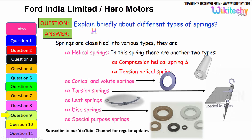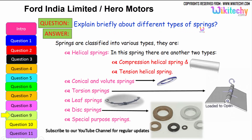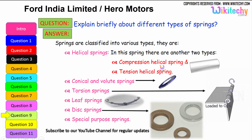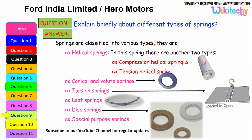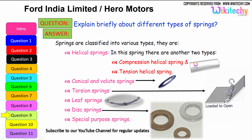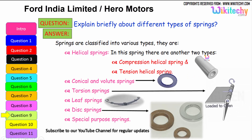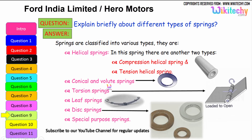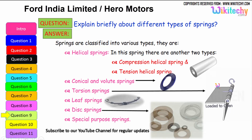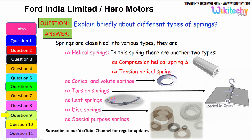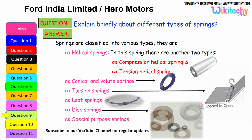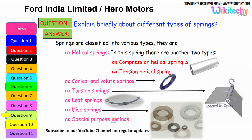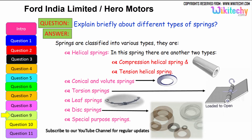Now let us briefly look at the different types of springs. Springs are classified into various types. The first is helical springs, which include two sub-types: compression helical springs and tension helical springs. The next types are conical volume springs, torsion springs, leaf springs, and disk springs. There are also special purpose springs. These are the different types of springs available.